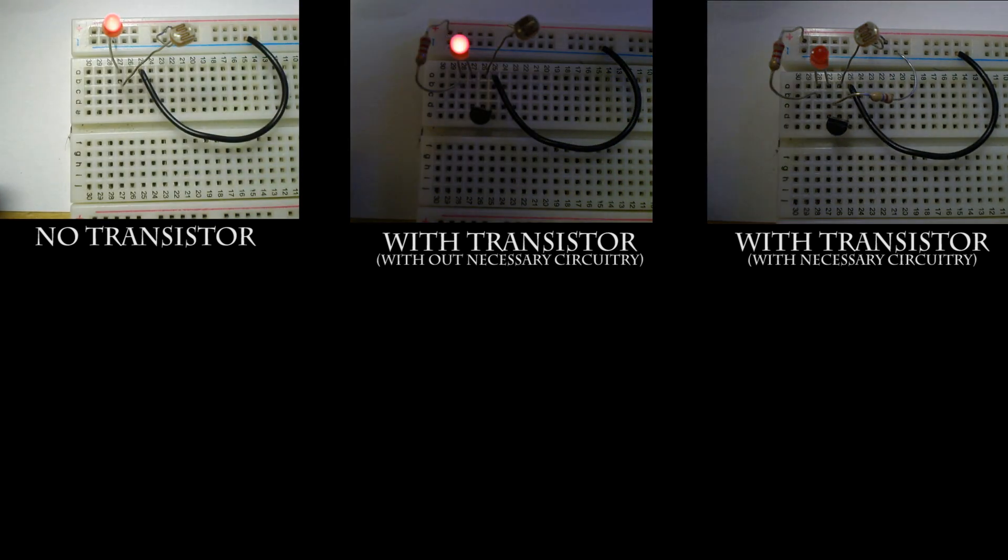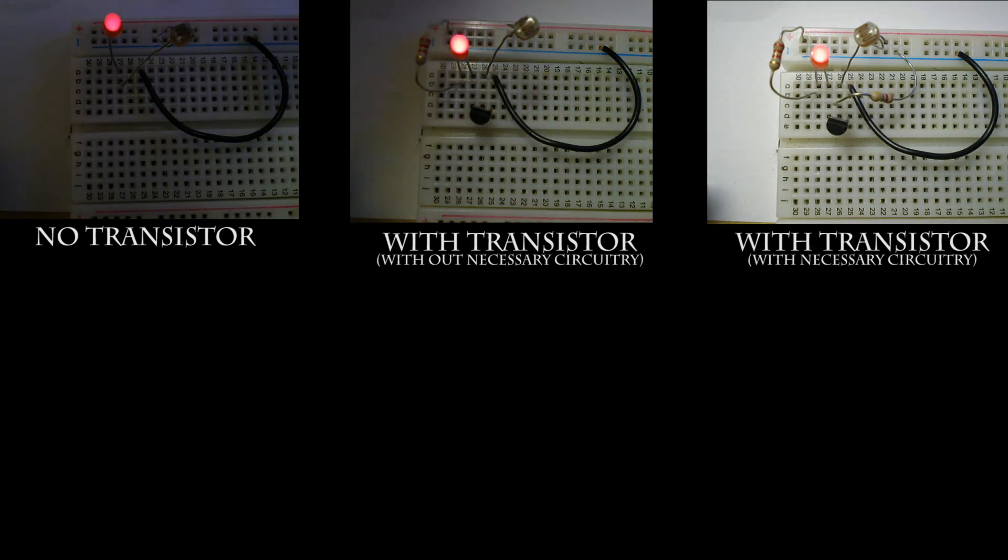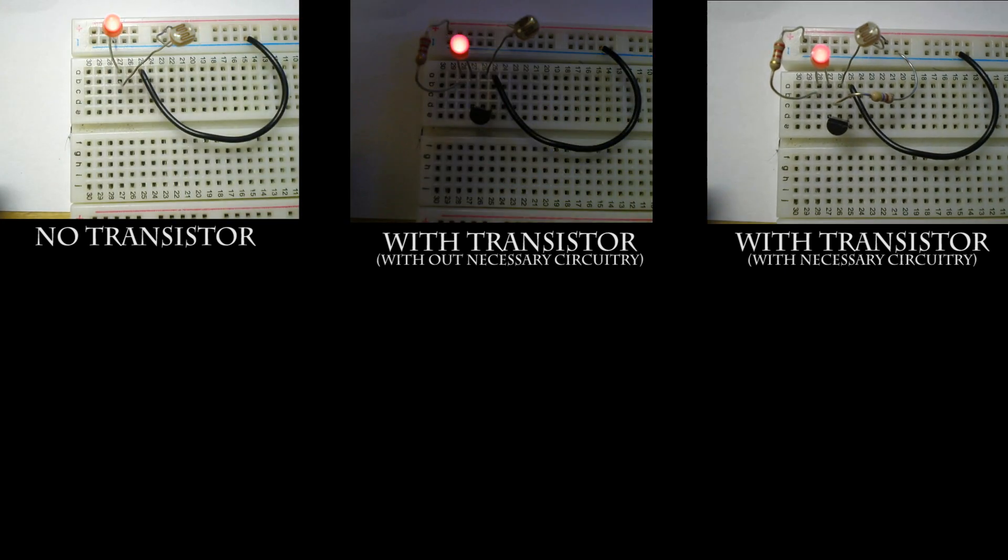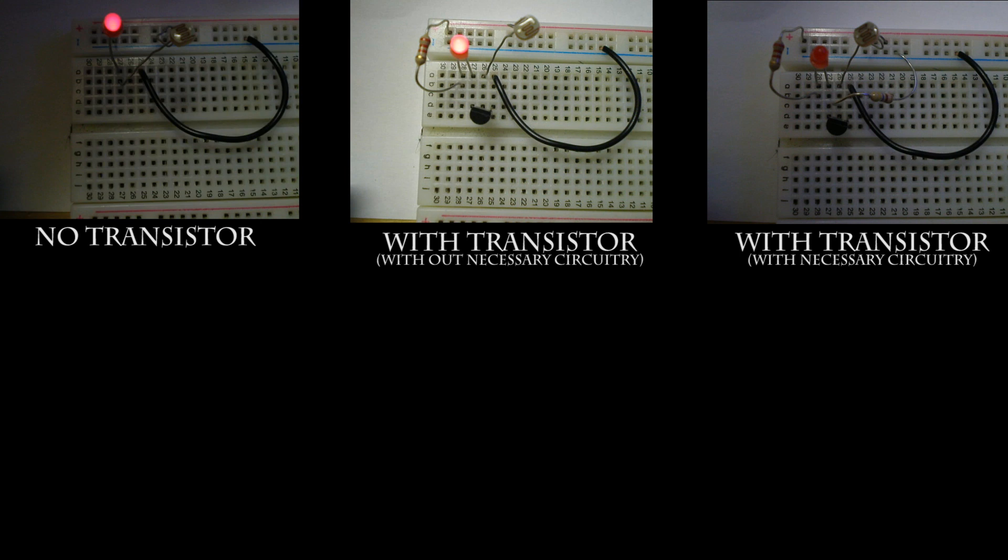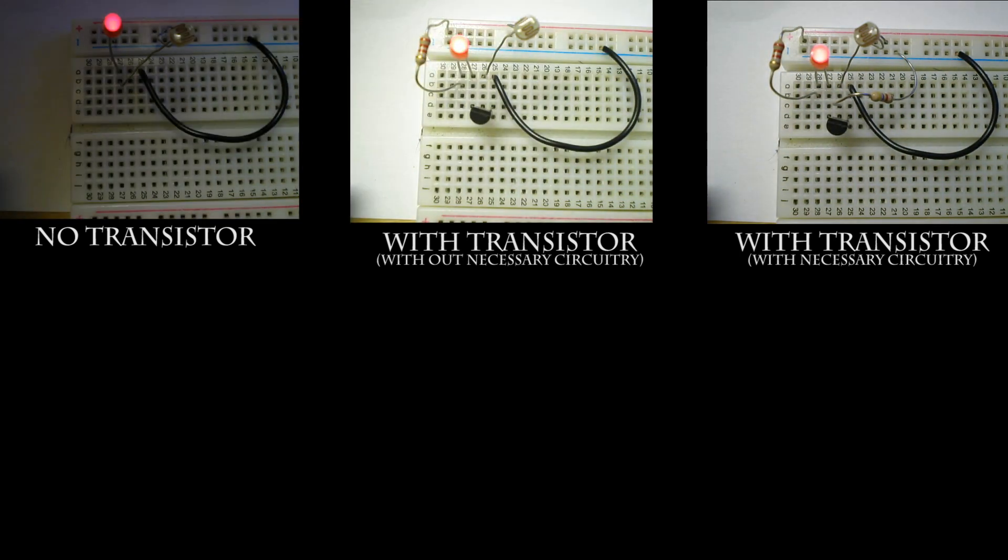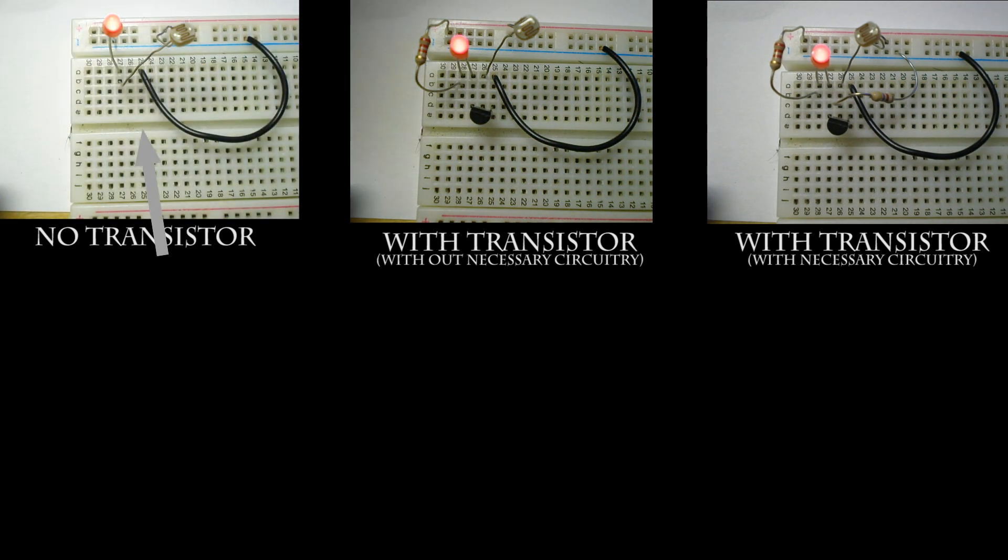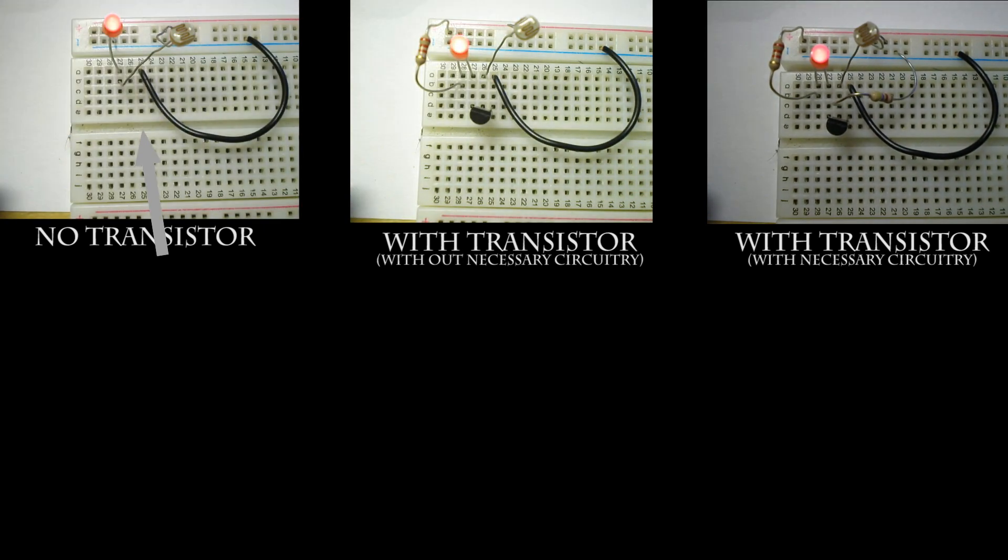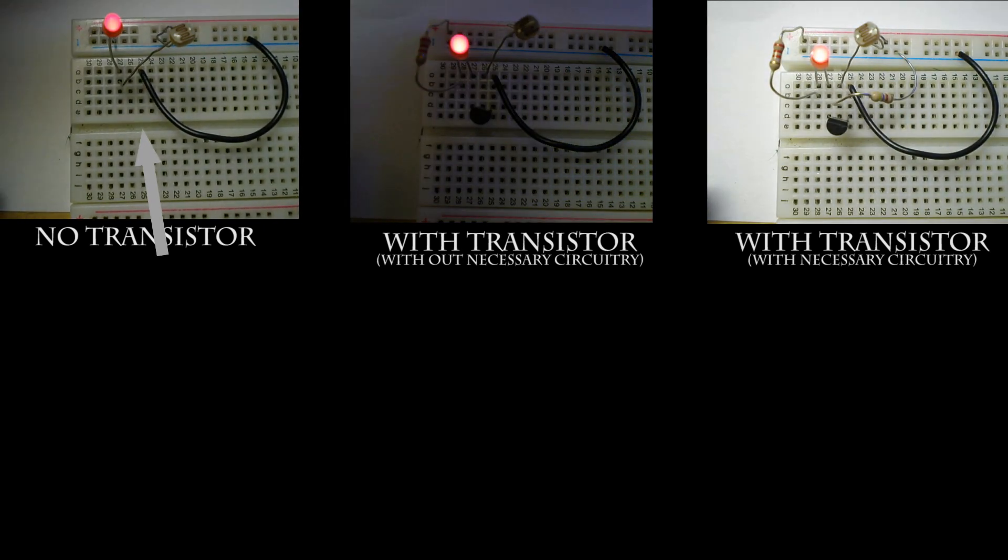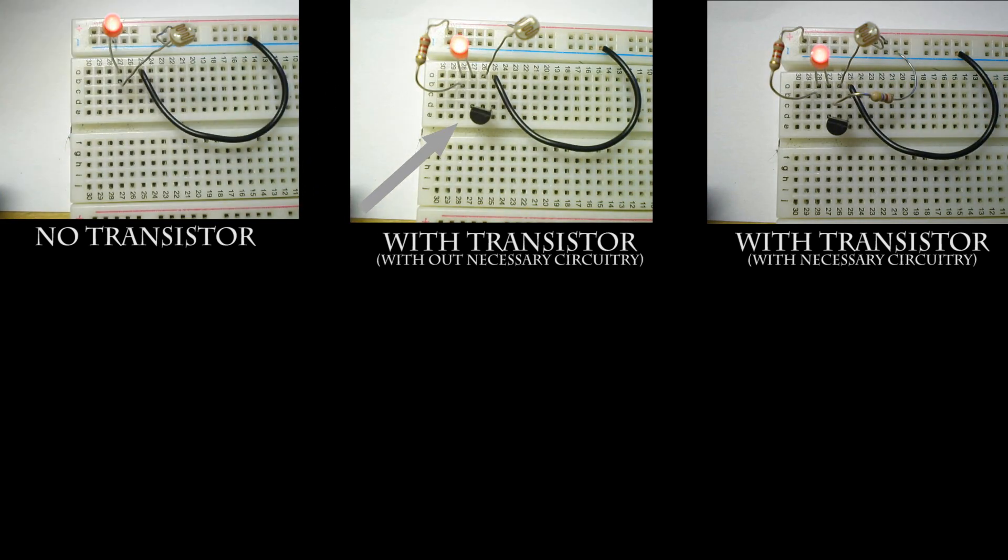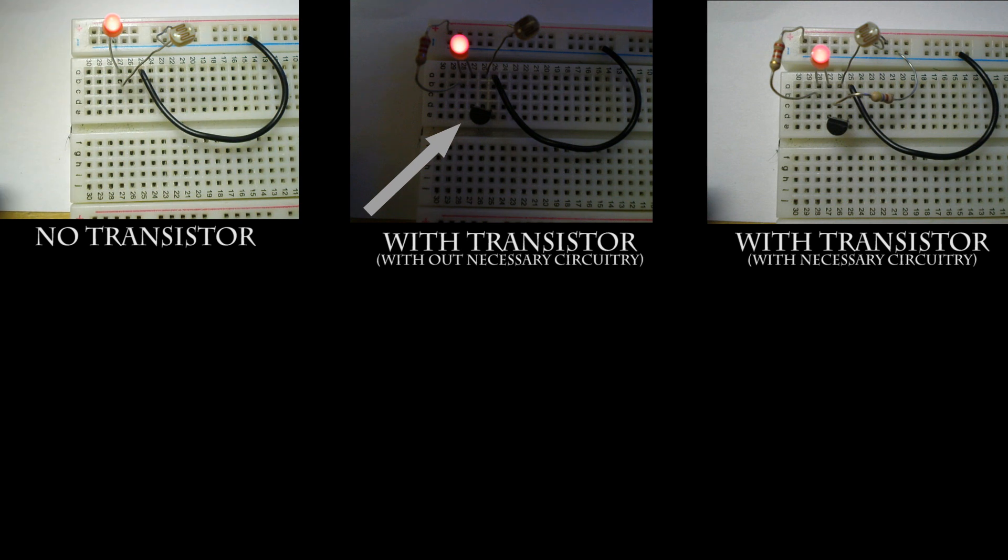Here is another example circuit that shows why a transistor might be useful. In this circuit, the LED will turn off whenever the photoresistor cannot sense enough light. Notice in the first circuit labeled no transistor, the LED brightness will barely change, regardless of how much light there is. Notice in the second circuit, the light doesn't change at all, no matter how much light there is.